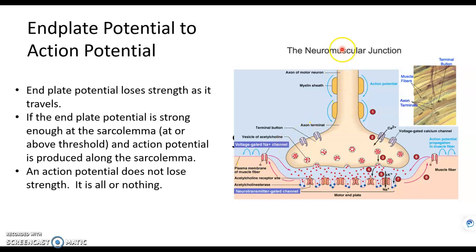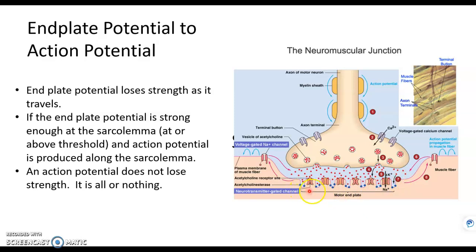Let's recap: the action potential travels down the neuron to the axon terminal. When it does so, calcium rushes in. When calcium rushes in, that causes these vesicles full of acetylcholine to release through exocytosis the acetylcholine into the synaptic cleft. Acetylcholine binds to the receptors on the motor end plate. The motor end plate is the part of the sarcolemma — the plasma membrane of the muscle fiber — that's part of this neuromuscular junction. Acetylcholine binding causes sodium to rush in and potassium to rush out, which changes the interior to positive. That change in voltage causes this rush of electrical energy on the motor end plate. We call that end plate potential.